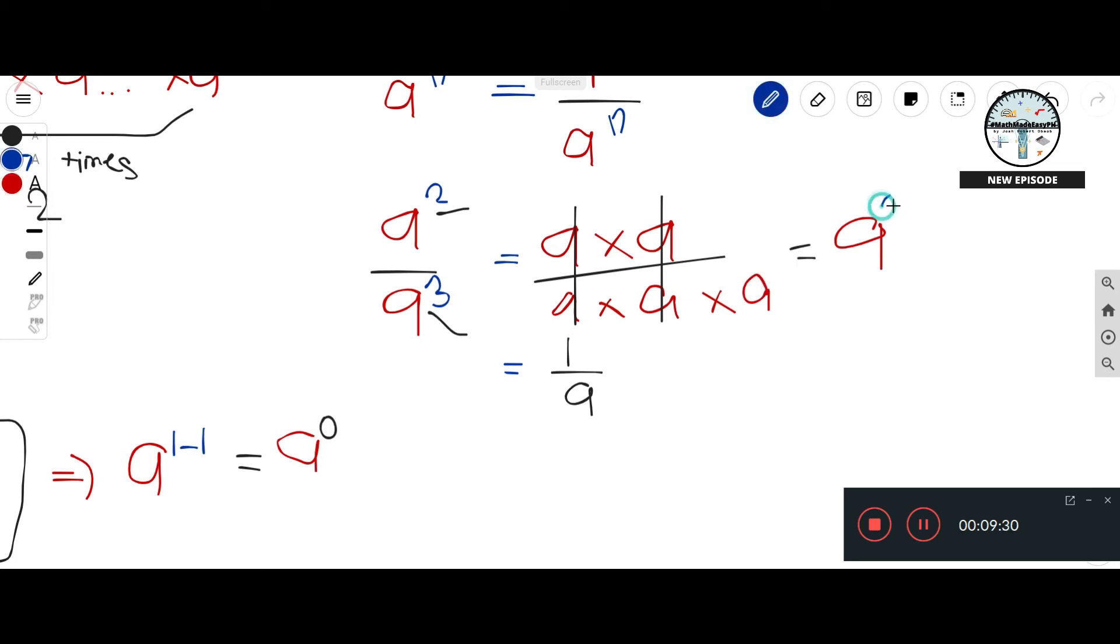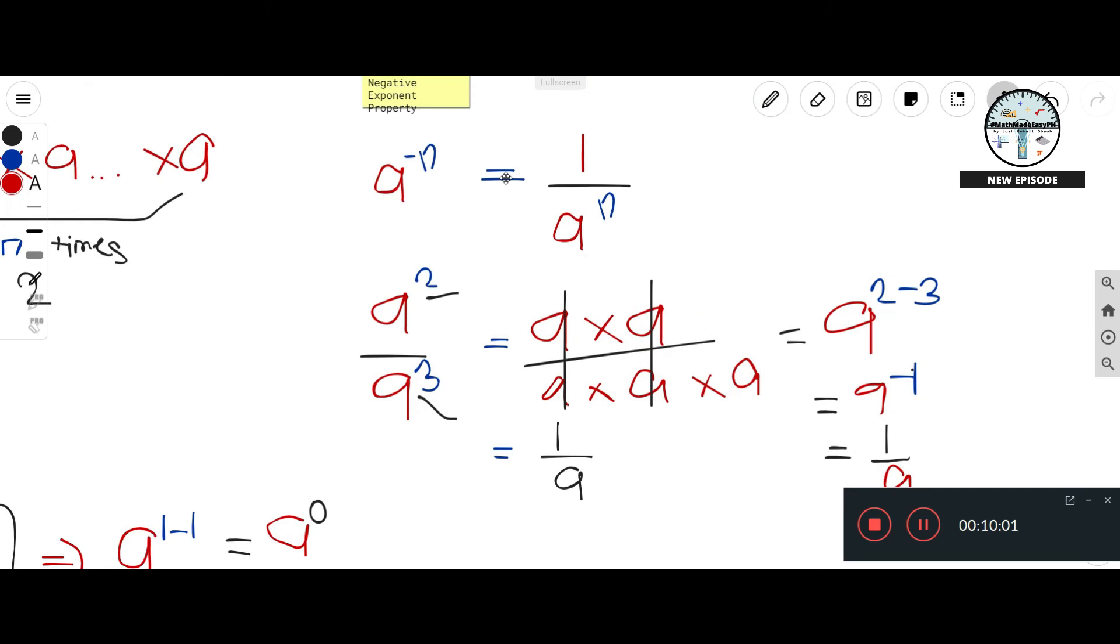So 2 minus 3 that is equal to negative 1. This is equal to negative 1, which makes absolute sense why when the exponent is negative it will become like this. So this is the example. So I hope this is clear for you.